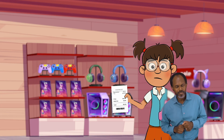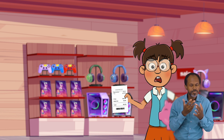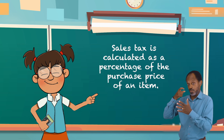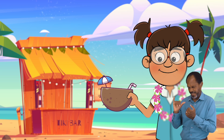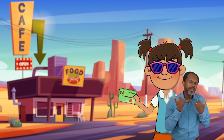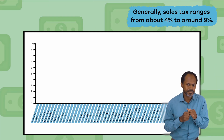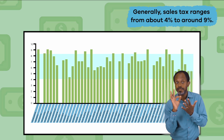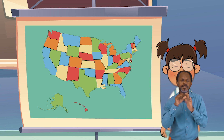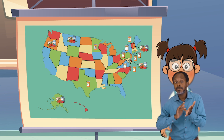Now that we know what sales tax is, let's talk about how it is determined or calculated. Sales tax is calculated as a percentage of the purchase price of an item, and this rate changes depending on what state you live in and what item you are purchasing. Generally, sales tax ranges from about 4% to around 9%. And sometimes, depending on where you live, items like groceries and some prescription medications are exempt from sales tax.